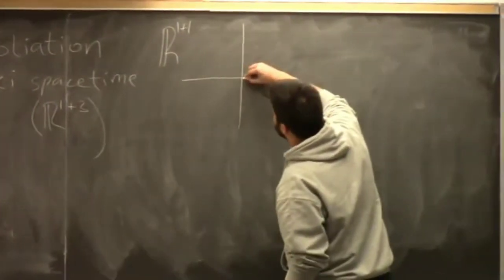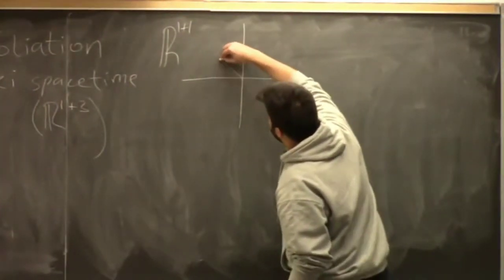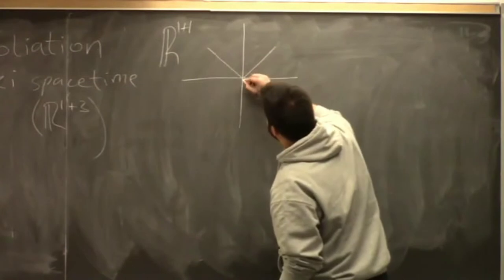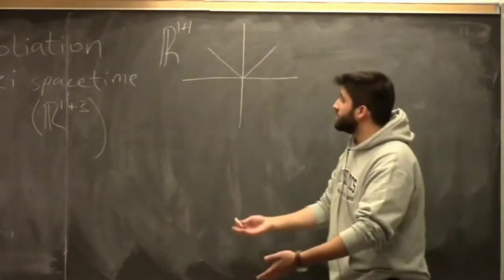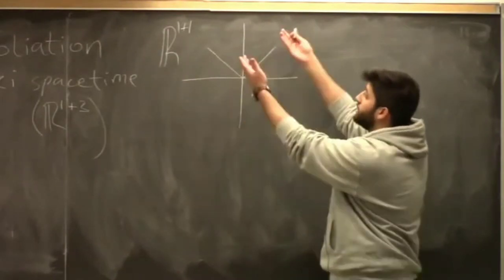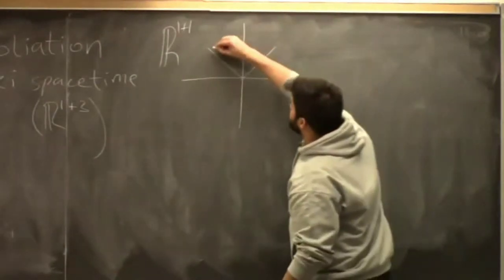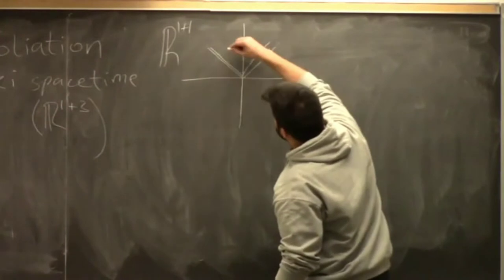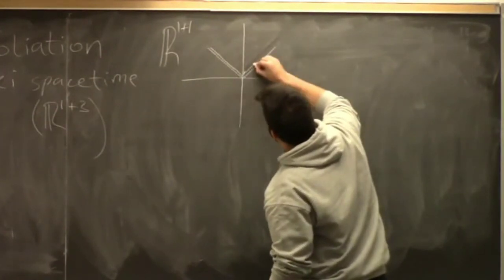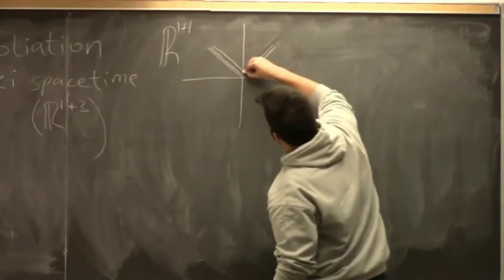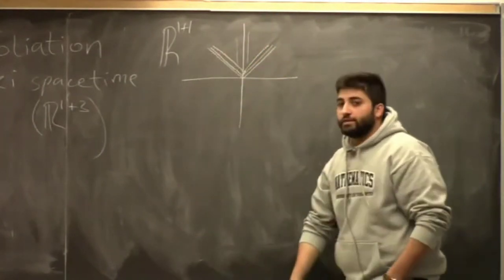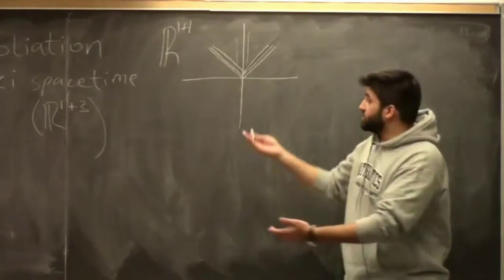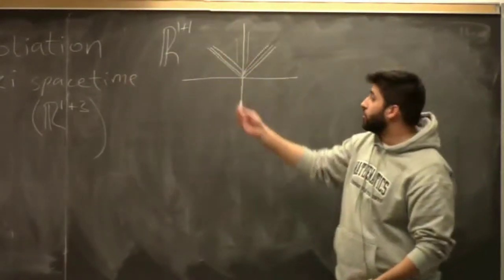So all the future directed cones are of the form this. This is where the future directed cones start from. So if we consider a family of future directed cones that just continue along the time axis, then it's just simple. It'll be like this, more that way, like this. And then all these families will be going up, going up, going up. So that's one null foliation, which is of future directed cones.